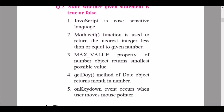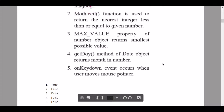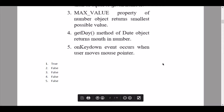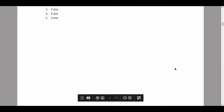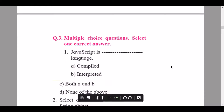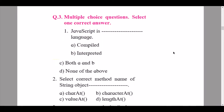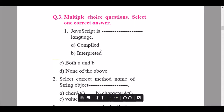Moving to question 3, multiple choice questions, select one answer. Question 1: JavaScript is a dash language — the answer is option C, both compiled and interpreted language.